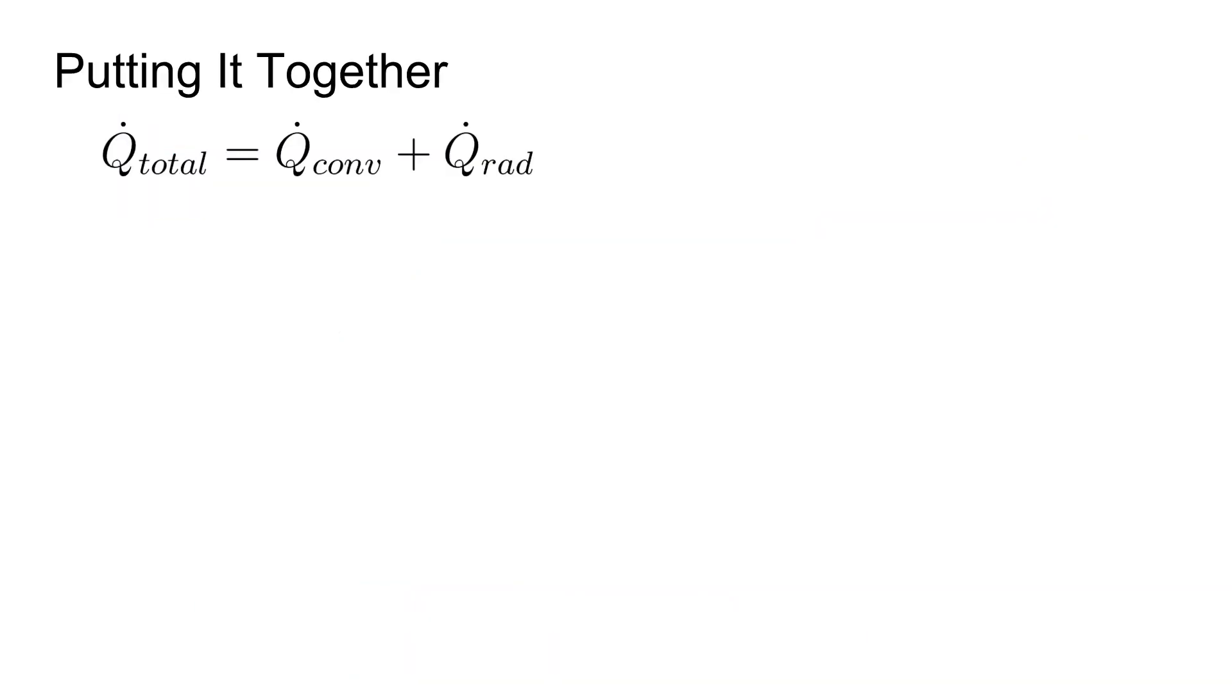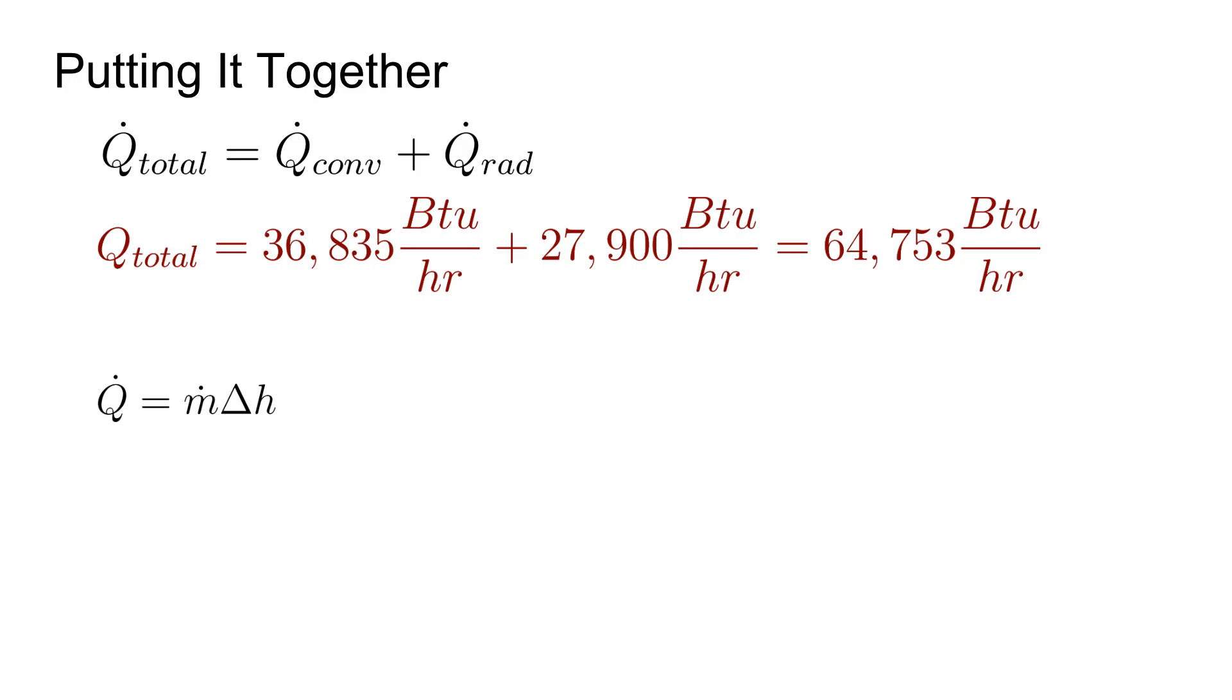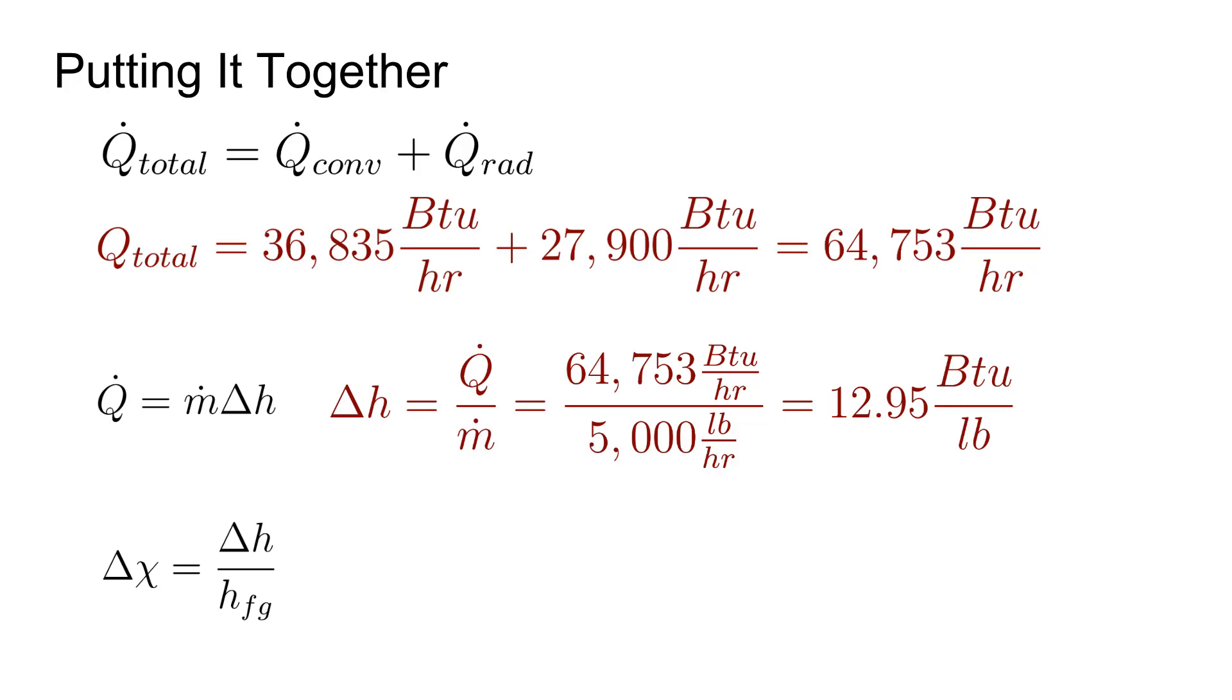To put it all together, according to our original game plan, we can add the heat loss from convection and radiation. That's nearly 37,000 BTUs per hour for the convection and nearly 28,000 BTUs per hour for the radiation for a total heat loss of some 64,000 BTUs per hour. Now we want to know how much that heat loss actually changed the enthalpy of the steam. To determine that, we write q dot equals m dot delta H, and rearrange that for delta H, then substitute the total heat loss and mass flow rate, and we get 12.95 BTU per pound as the change in enthalpy in the first 50 feet of pipe.